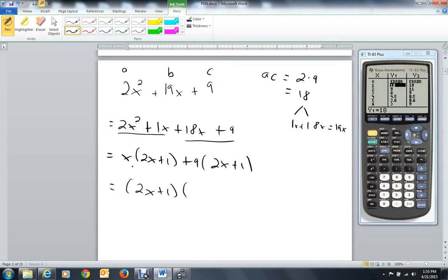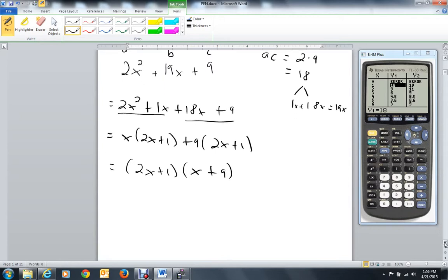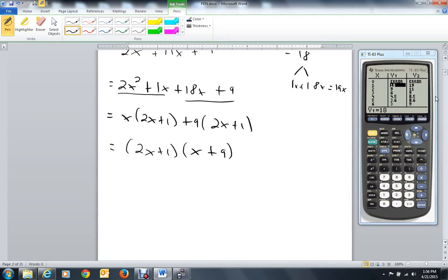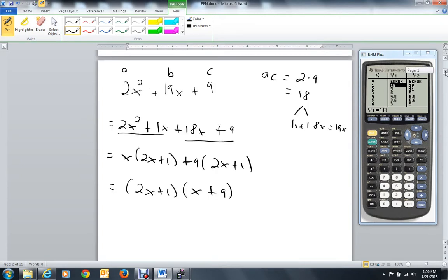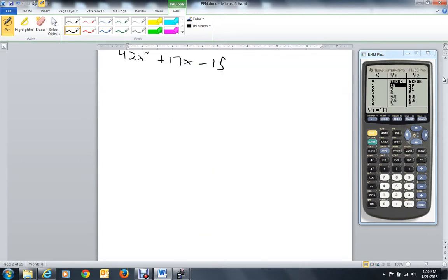That's one factor, and what's left over is our second factor, x plus 9. Let's do another one, one that may be a little bit more difficult. Let's look at 42x squared plus 17x minus 15.